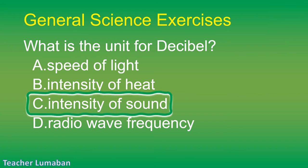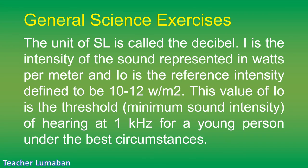The correct answer is Letter C: intensity of sound. The unit of sound level (SL) is called the decibel. I is the intensity of the sound represented in watts per meter, and I₀ is the reference intensity defined to be 10⁻¹² W/m². This value of I₀ is the threshold (minimum sound intensity) of hearing at 1 kHz for a young person under the best circumstances.